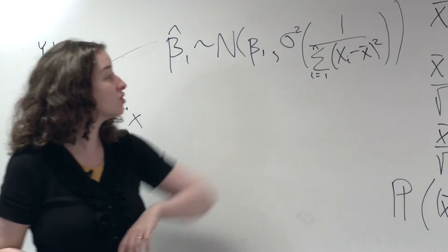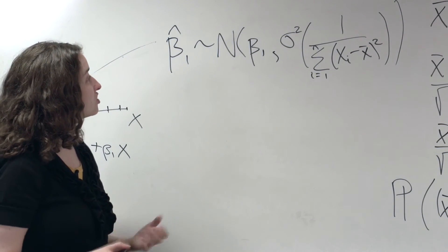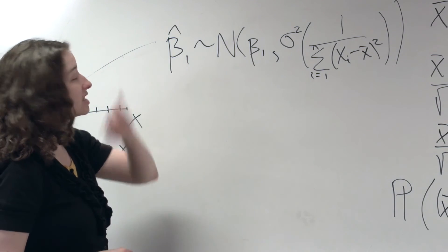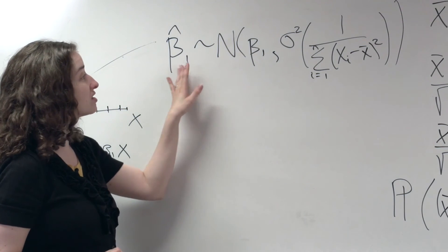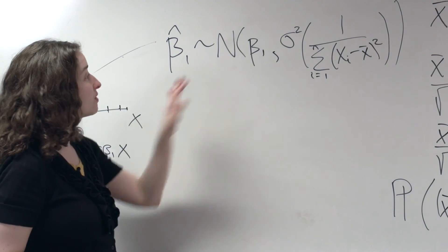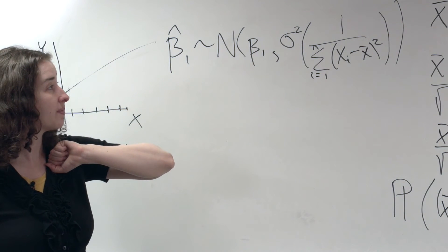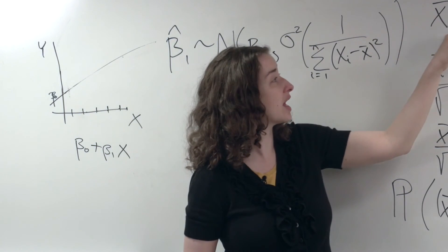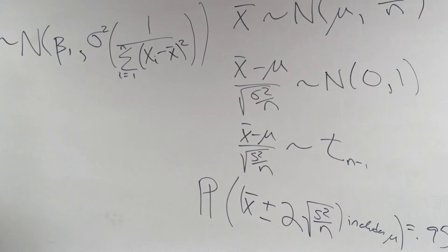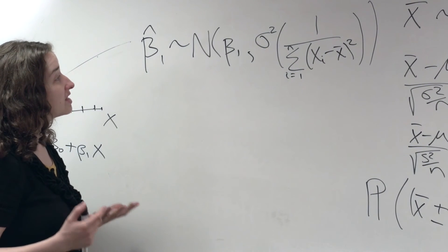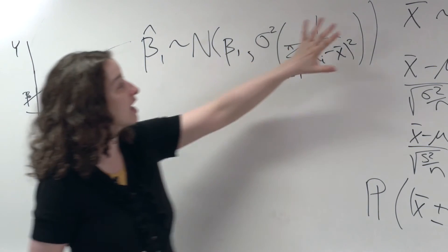This says that if we repeatedly sample from the population along this line and estimate slopes for each dataset, the mean of those slopes will equal the true slope — on average our slope estimate equals the truth — and the set of slopes follows a normal distribution with a particular variance given by this expression. This should exactly parallel what we have for x-bar, where x-bars follow a normal distribution with mean equal to the true mean and some particular variance, also by the central limit theorem. Note the parallels in how these variances look.